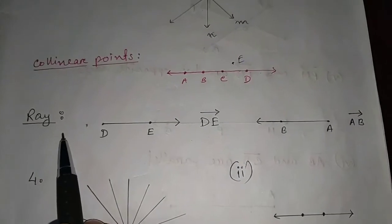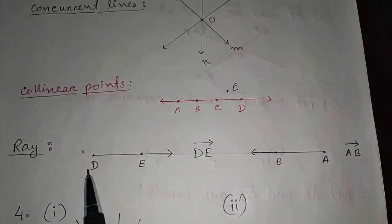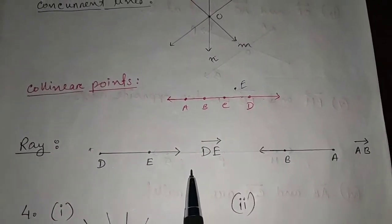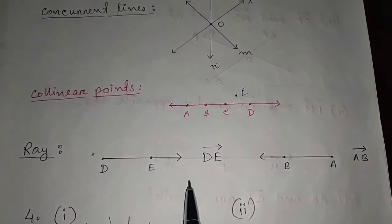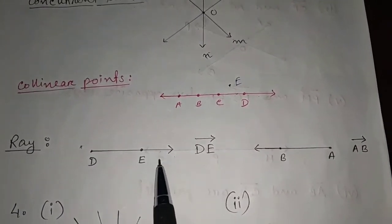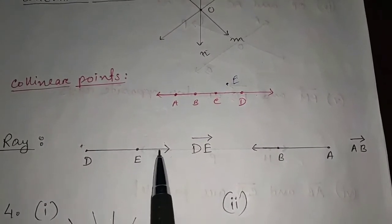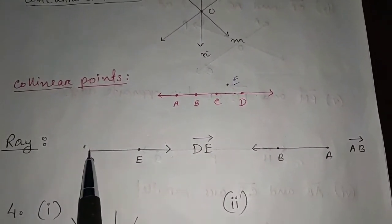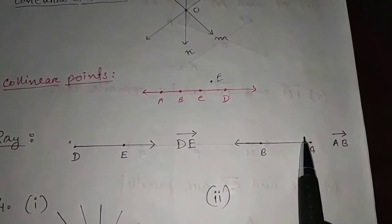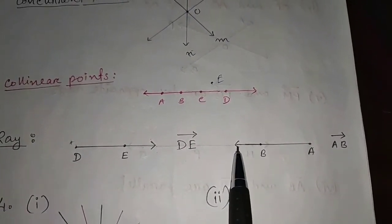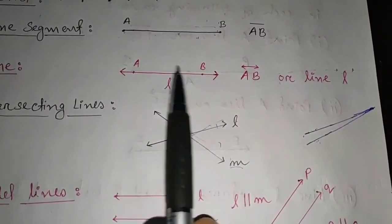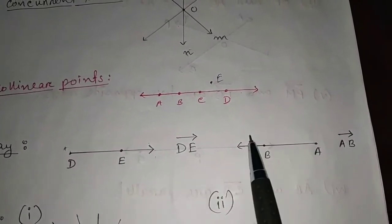Next is ray. A ray means when a line segment is extended in one direction only, we get a ray. A ray is named by its end point and any other point on it. In case of a line, we can extend in both directions, but in case of a ray, we can extend only in one direction.